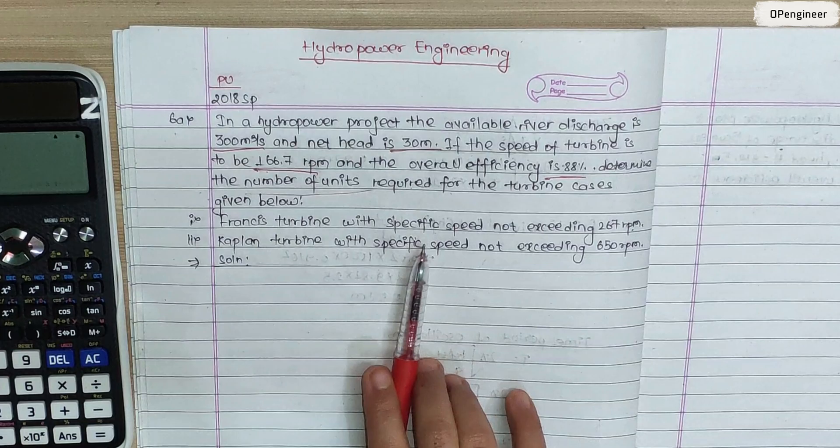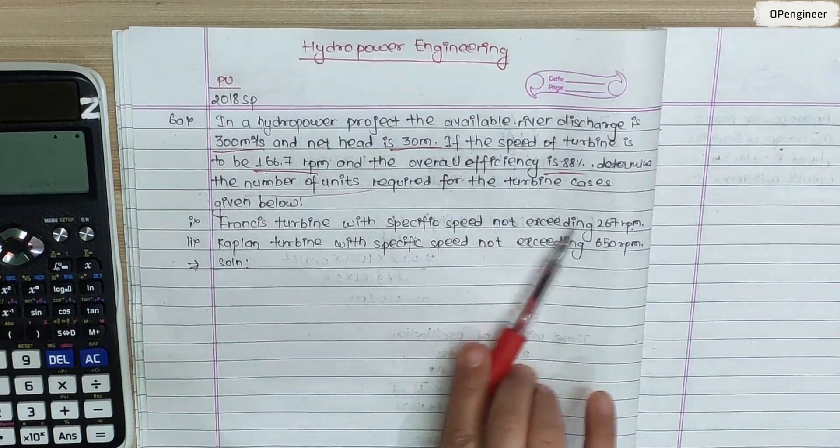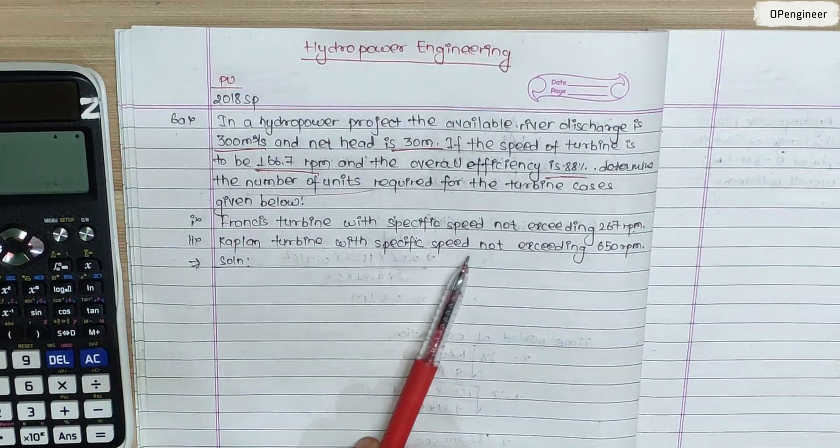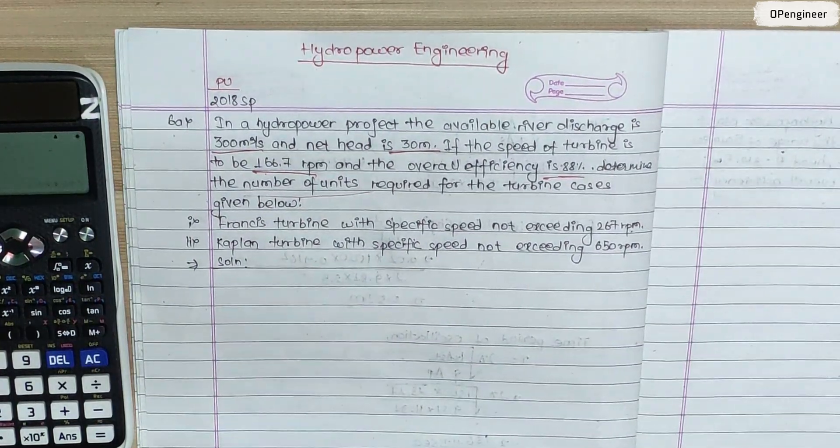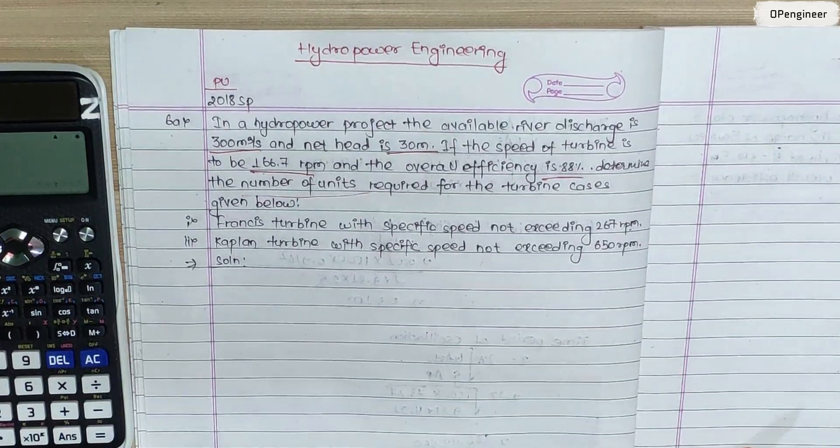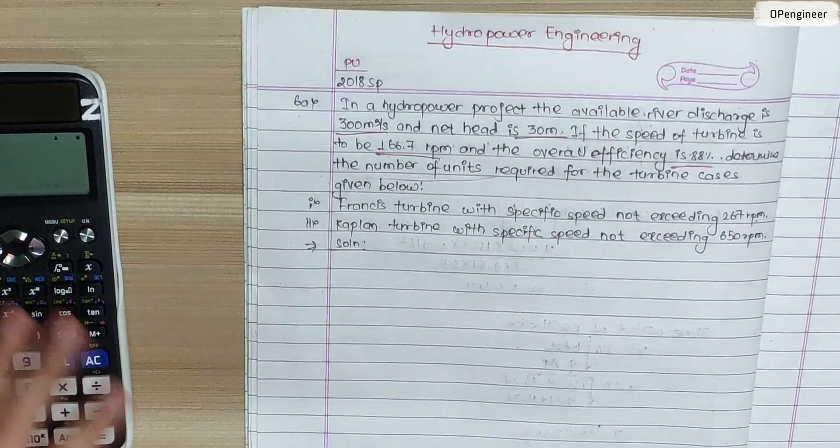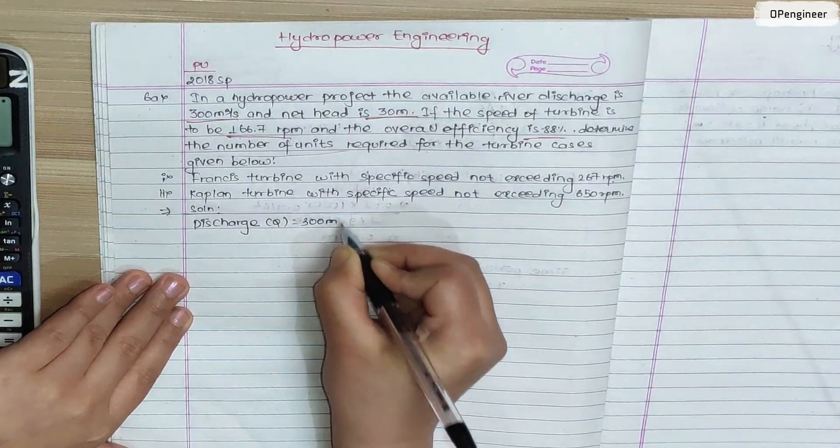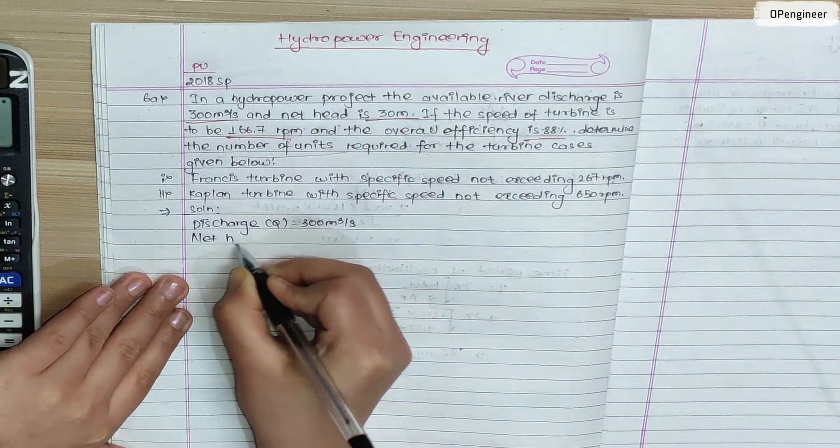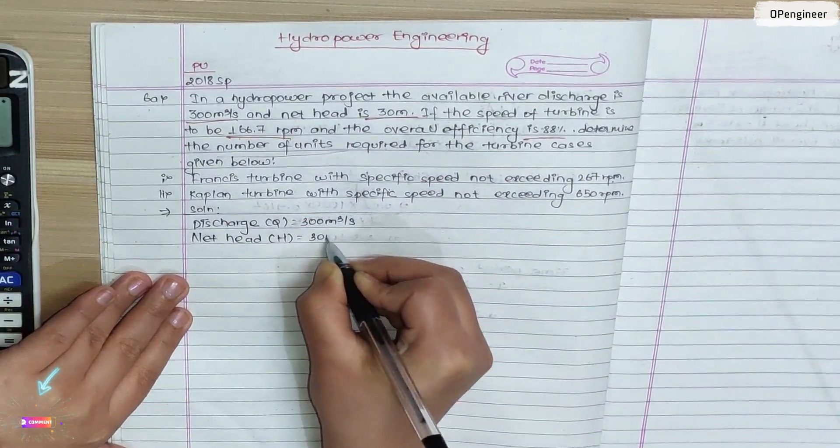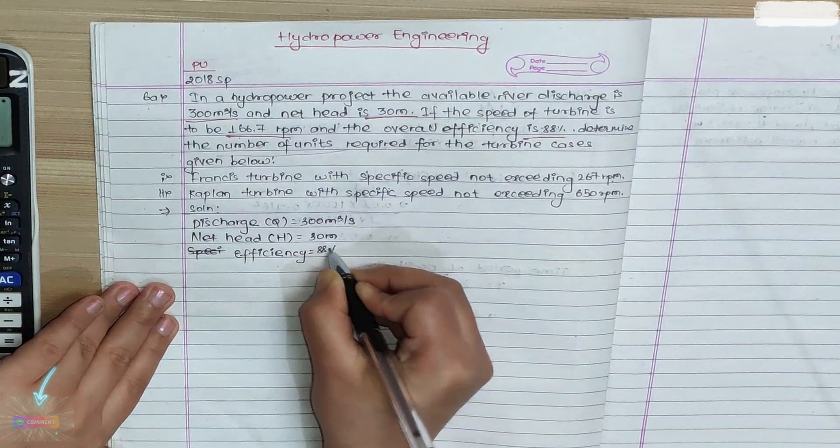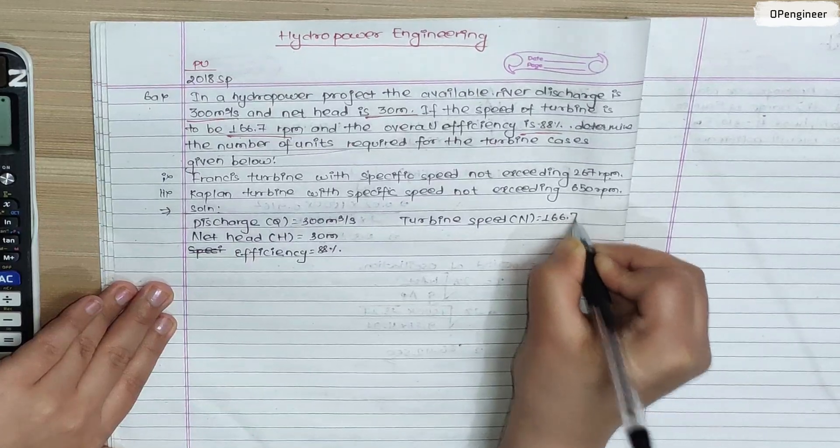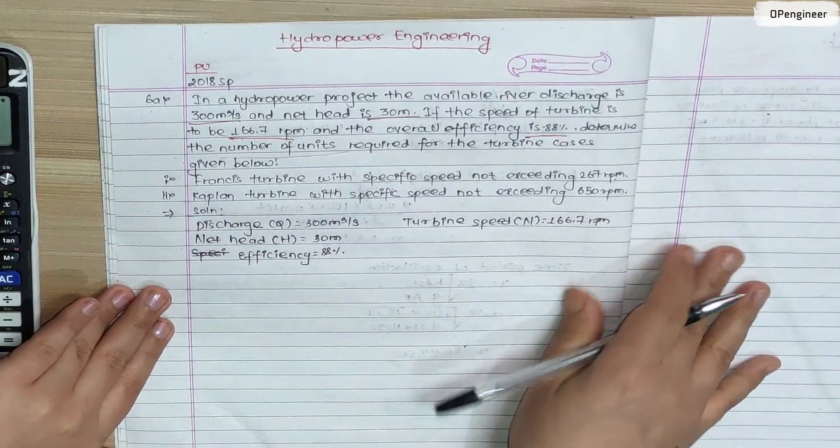Turbine cases: Francis turbine with specific speed not exceeding 267 rpm, Kaplan turbine with specific speed not exceeding 650 rpm. So at the beginning of the question, let me give you the given data. Discharge Q = 300 cubic meters per second, net height H = 30 meters, overall efficiency η = 88%, turbine speed N = 166.7 rpm.